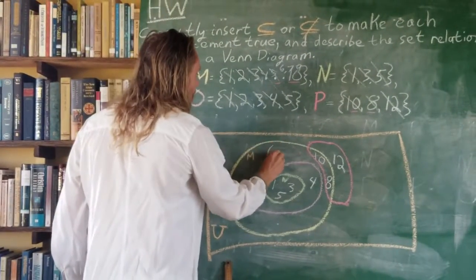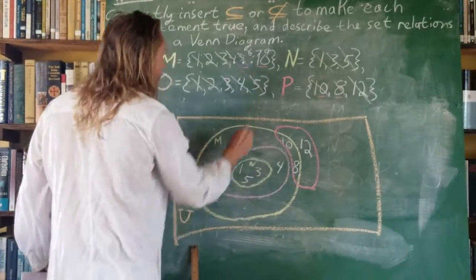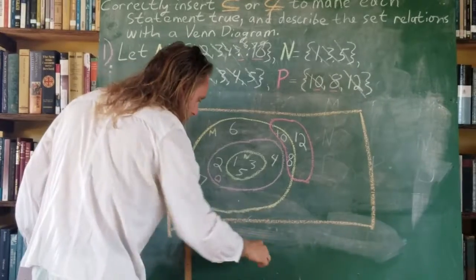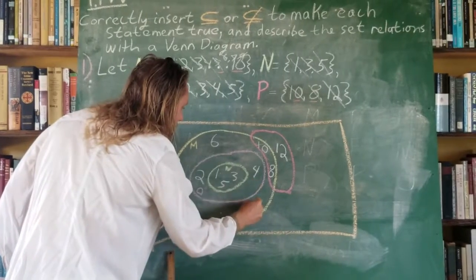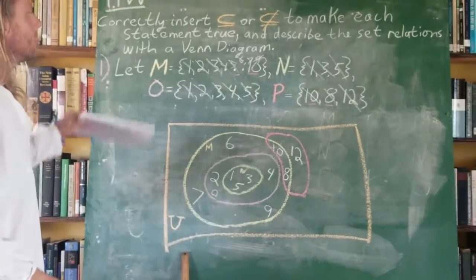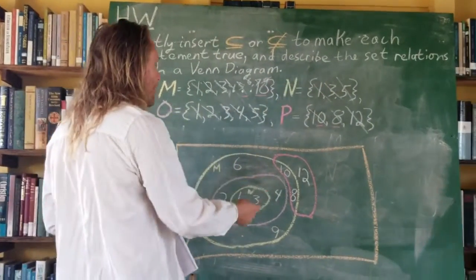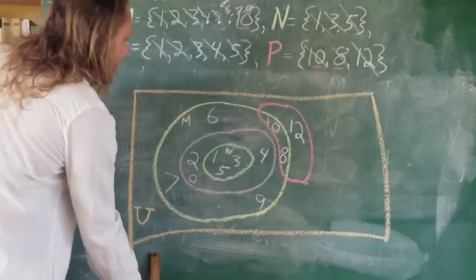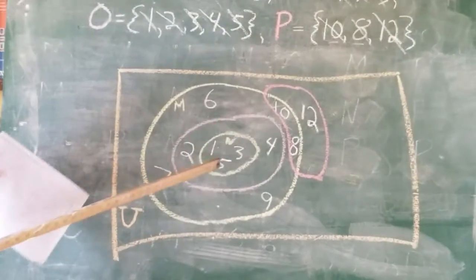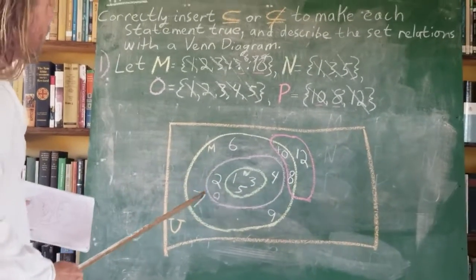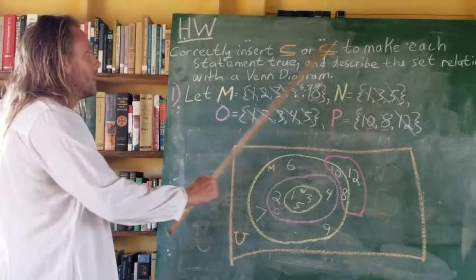We place 6, 7, and 9 in M. All elements are accounted for and correspond to the proper sets, and everything is within the universal set. This is a nice visual, pictorial perspective of the set relations that we noted and denoted previously.